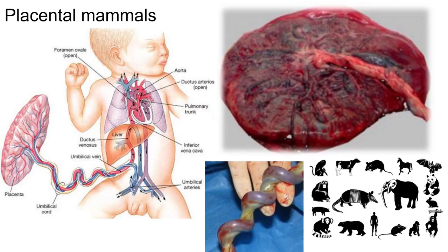Looking at diagrams: we see the placenta, the umbilical cord bringing blood from the fetus to the placenta, and back. Eventually after birth, the placenta breaks away and is delivered after the baby comes out — through the cervix and vagina. Animals also frequently eat the placenta after birth since it still has nutrients and protein.